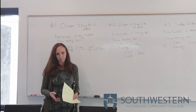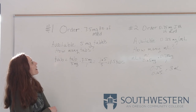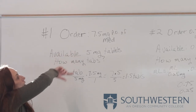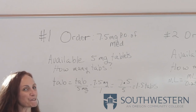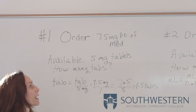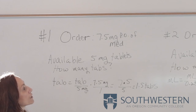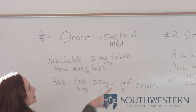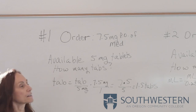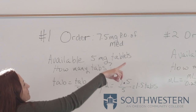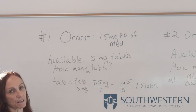The first one we're going to go over: we have an order of 7.5 milligrams PO — PO, as you should be memorizing those abbreviations, means by mouth. This is a tablet of a medication, and what's available from the pharmacy is 5 milligram tablets. So how many tablets are we going to give to reach that 7.5 milligrams the doctor ordered?